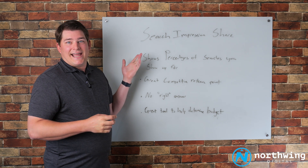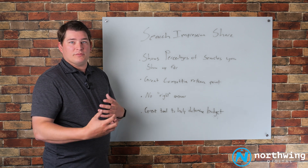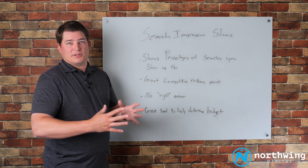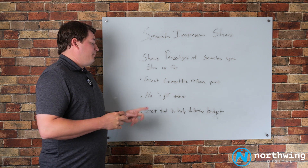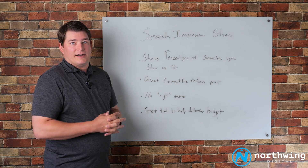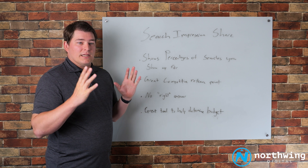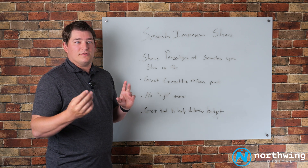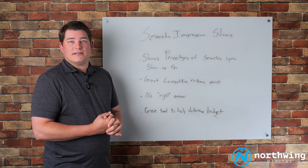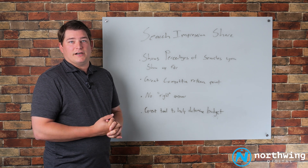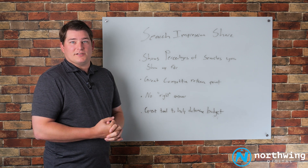If we see 70 to 80% search impression share for that budget, then the conversation becomes: what new ad groups, what new focuses, what new keywords can we add to expand before we have the budget increase conversation for the current focus? Search impression share is very underrated — I don't think agencies or clients look at this metric often enough. It allows you to have a quick reference point: am I showing up for one out of five searches, or four out of five searches in my focus areas, and make determinations based on that metric.